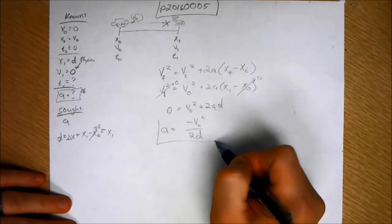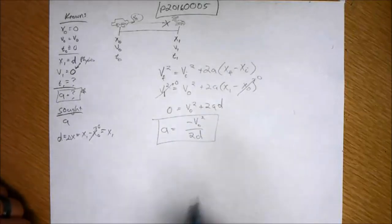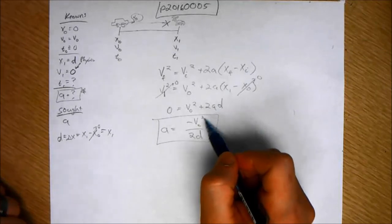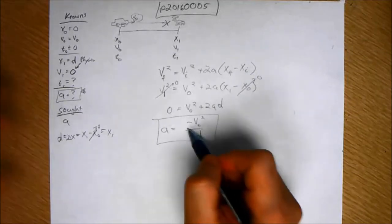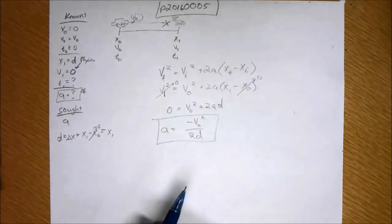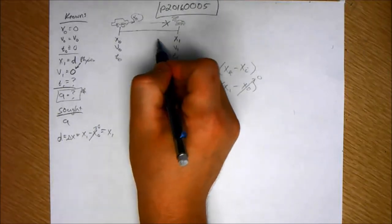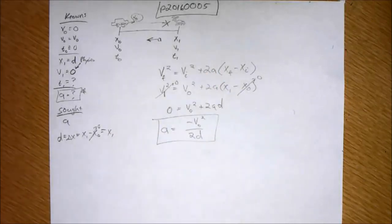And that is our solution. So now, given this solution, no matter what initial velocity is given to us, we know we can just quickly throw it into this and calculate the acceleration. And it makes sense that the acceleration is going to be the negative of the velocity, right, because the acceleration is going to be in that direction.